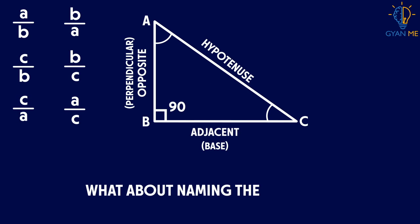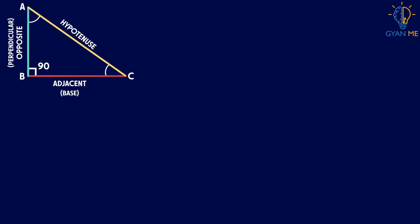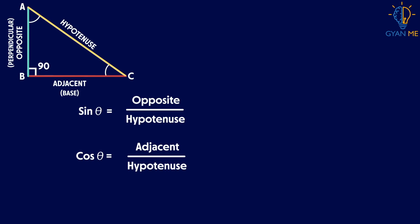Now what about naming these ratios? Well, we just named the sides of these triangles. Now what about naming these three ratios? So the first one is sine, the second one is cosine and third one is tan.